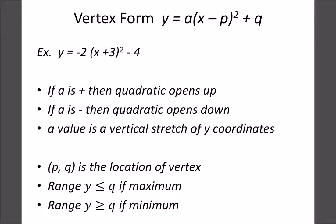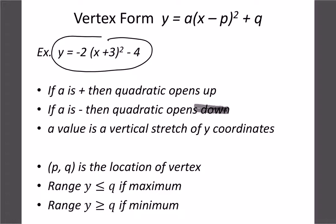The first thing we looked at is if A is positive the graph opens upwards, if A is negative it opens downwards. Looking at this example equation, we know that it opens downwards. The A value is a vertical stretch — because it's two in the equation, that means we would say vertical stretch of two.